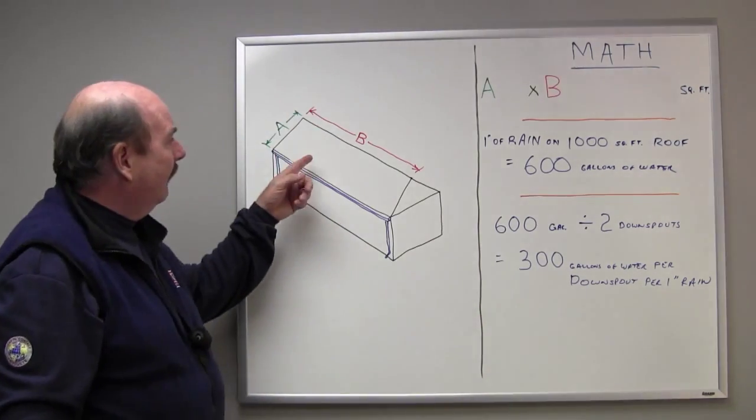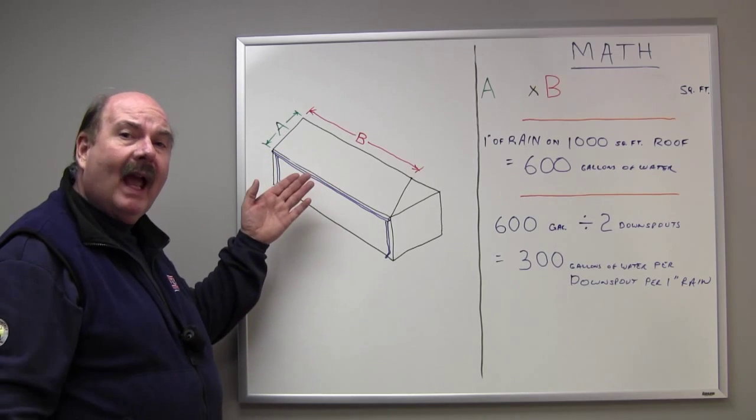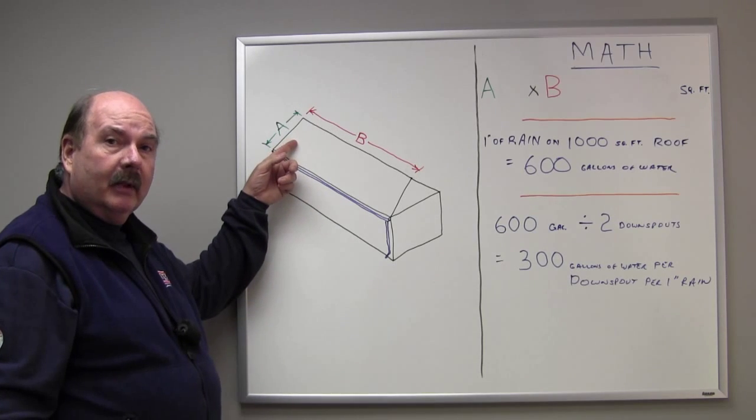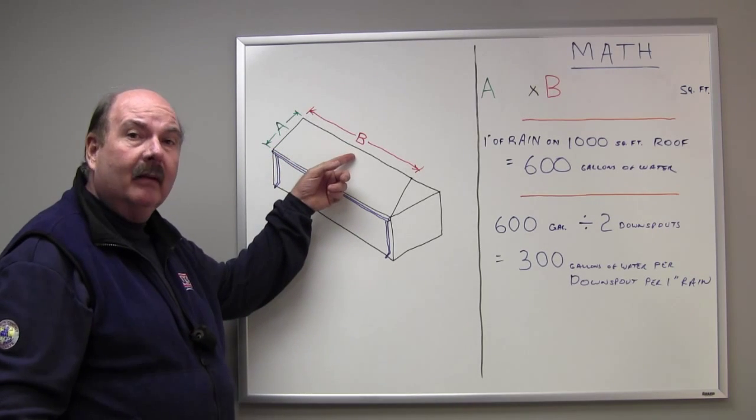Here we have a simple drawing of a roof line and we're going to work with half of the roof here. There's two dimensions that are important, the width, which is A, and the length, B.